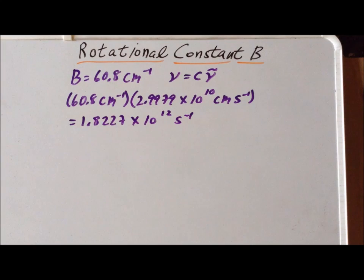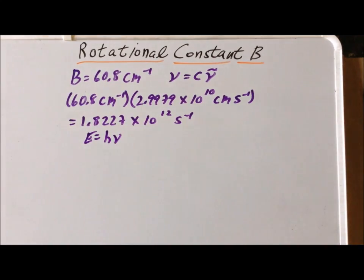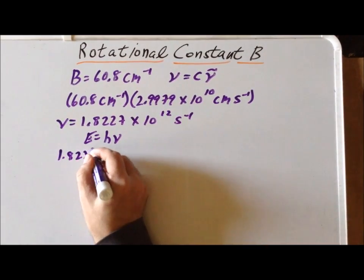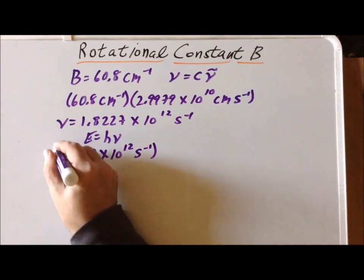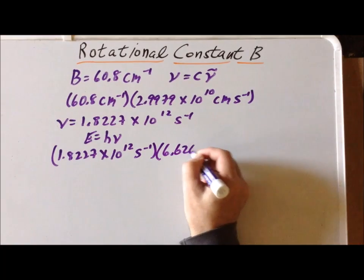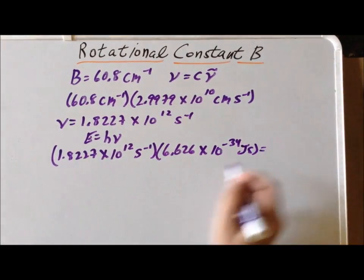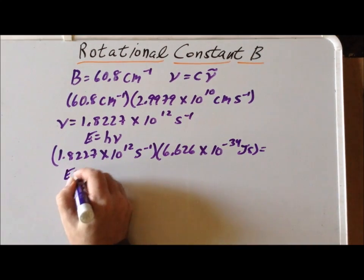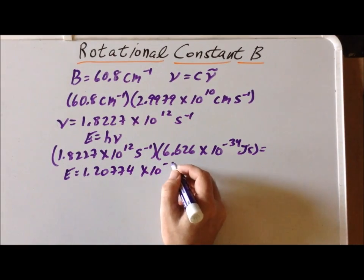So this gives us a frequency term. Now to convert from frequency to an energy term, recall that energy is equal to Planck's constant times the frequency. So we multiply 1.8227 times 10 to the twelfth inverse seconds by Planck's constant, 6.626 times 10 to the minus 34 joule-seconds, and we can convert this to the form of an energy. That gives us a value of 1.20774 times 10 to the minus 21 joules.